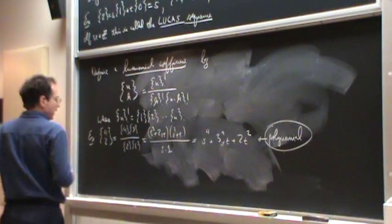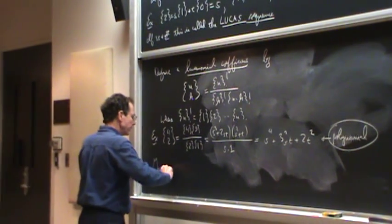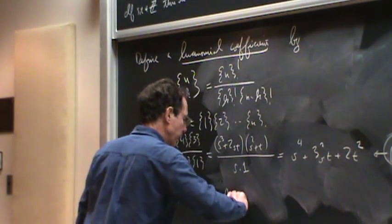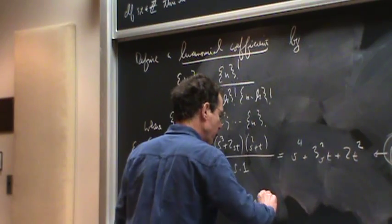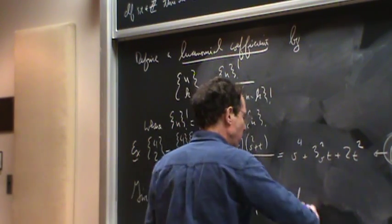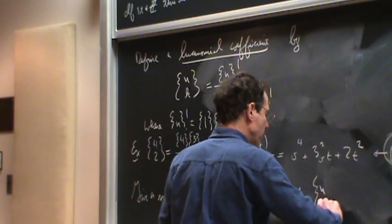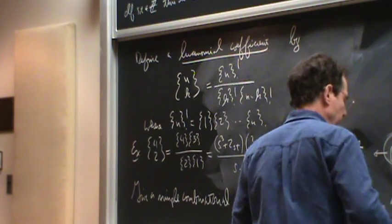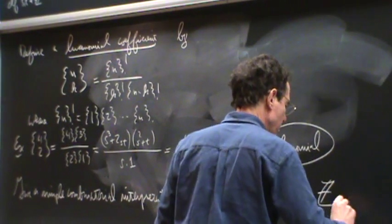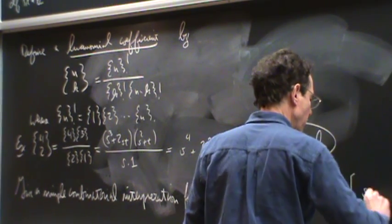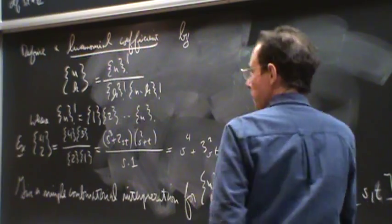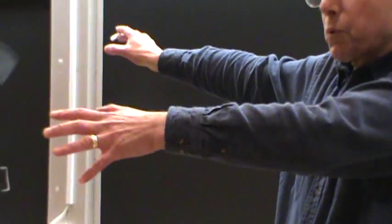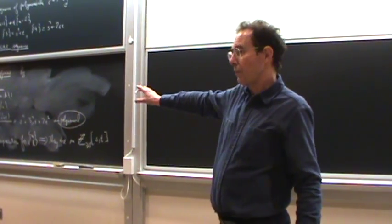So the purpose of the lecture today is to give a simple combinatorial interpretation for these guys, which of course then implies that they are in the set of polynomials of s and t with non-negative integer coefficients. Now, before doing that, that's where we're headed. That'll be the last theorem that I'll put on the board.